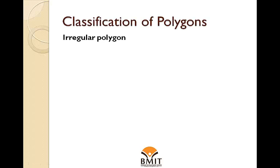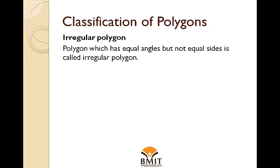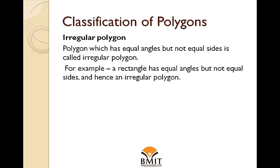Irregular Polygon: A polygon which has equal angles but not equal sides is called an irregular polygon. For example, a rectangle has equal angles but not equal sides, and hence is an irregular polygon.